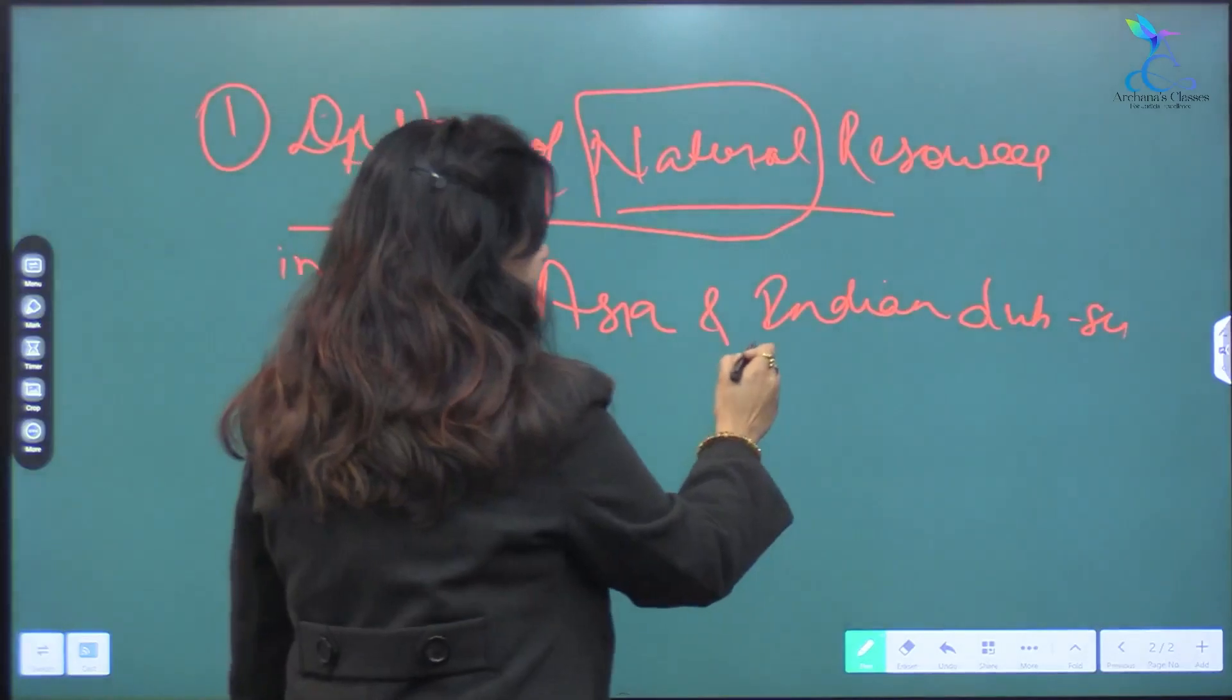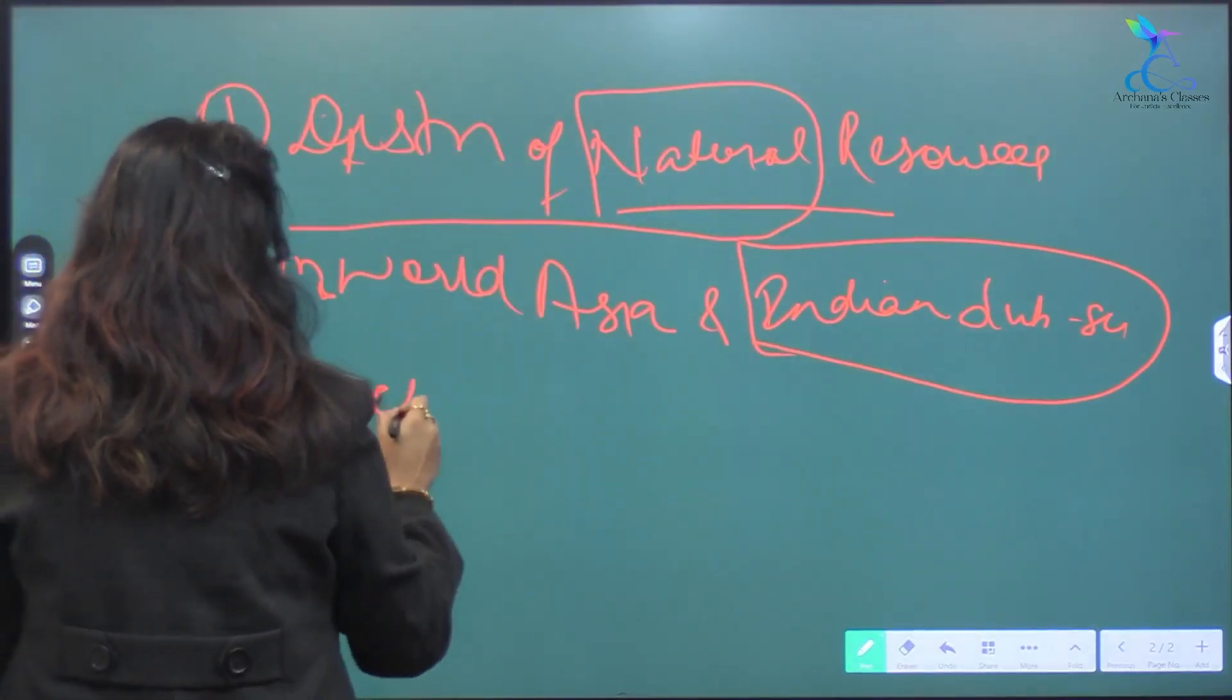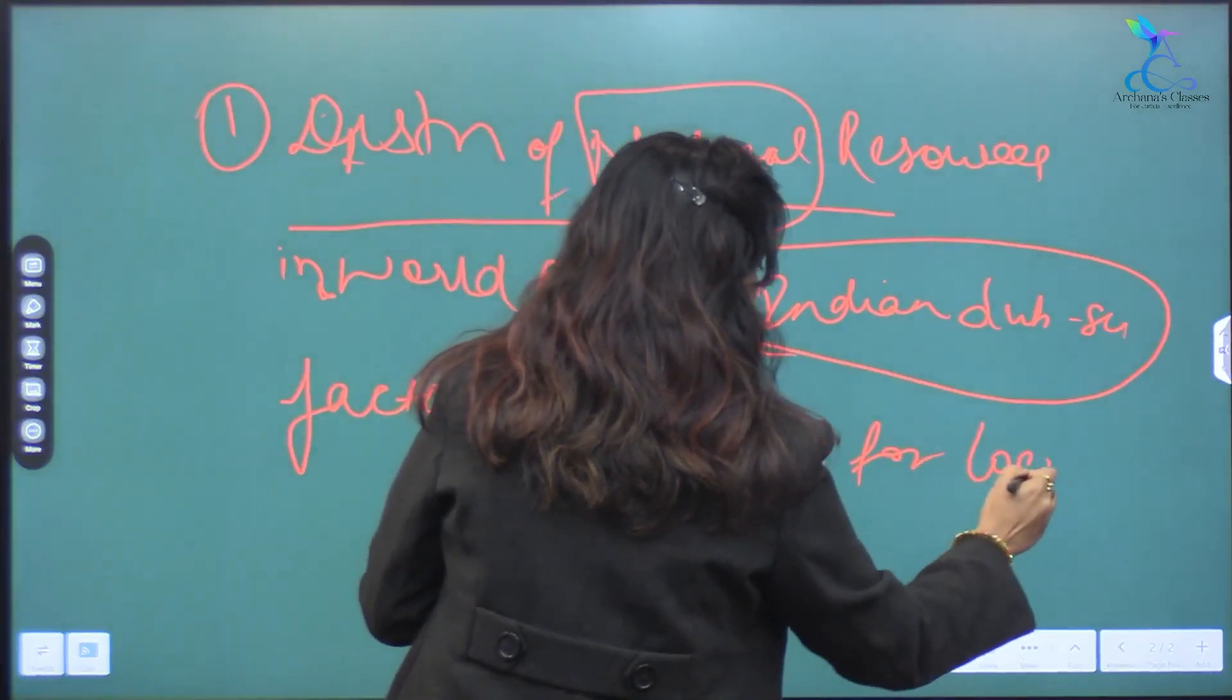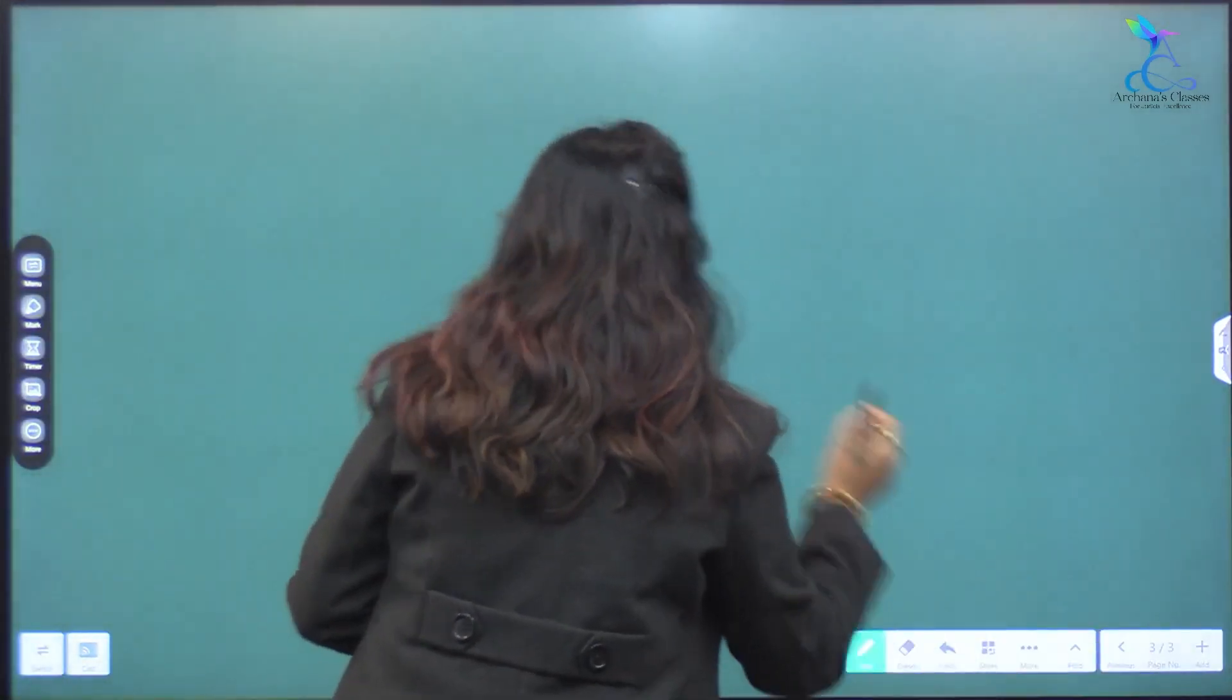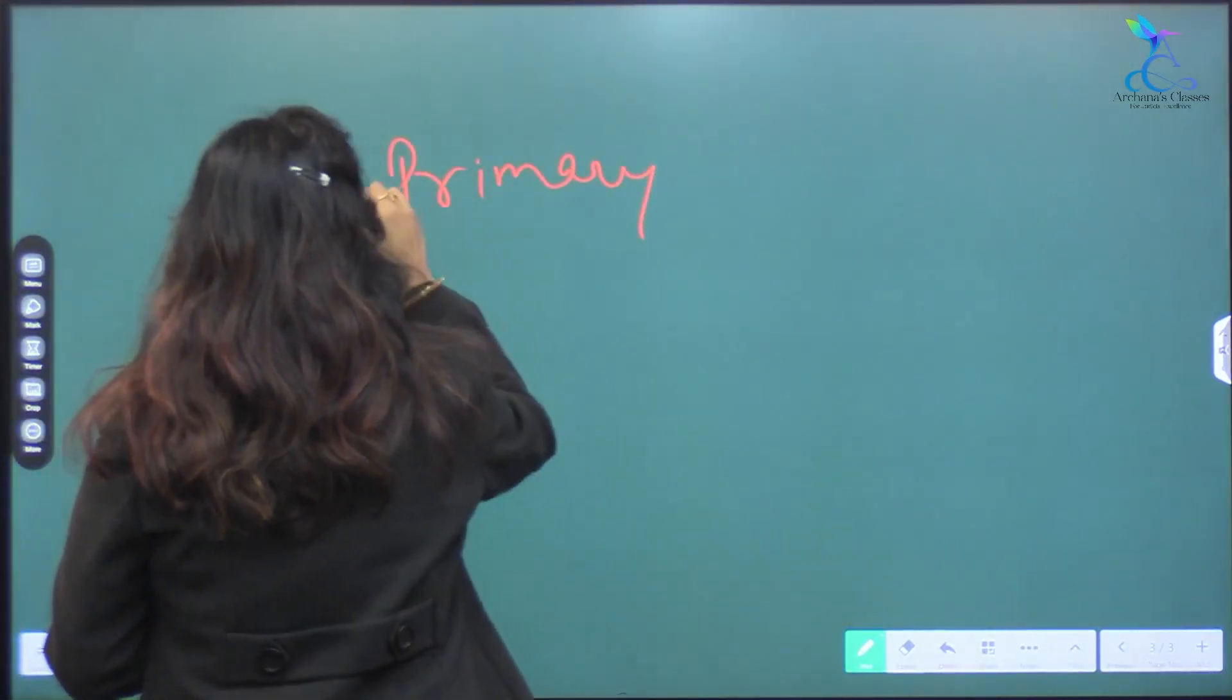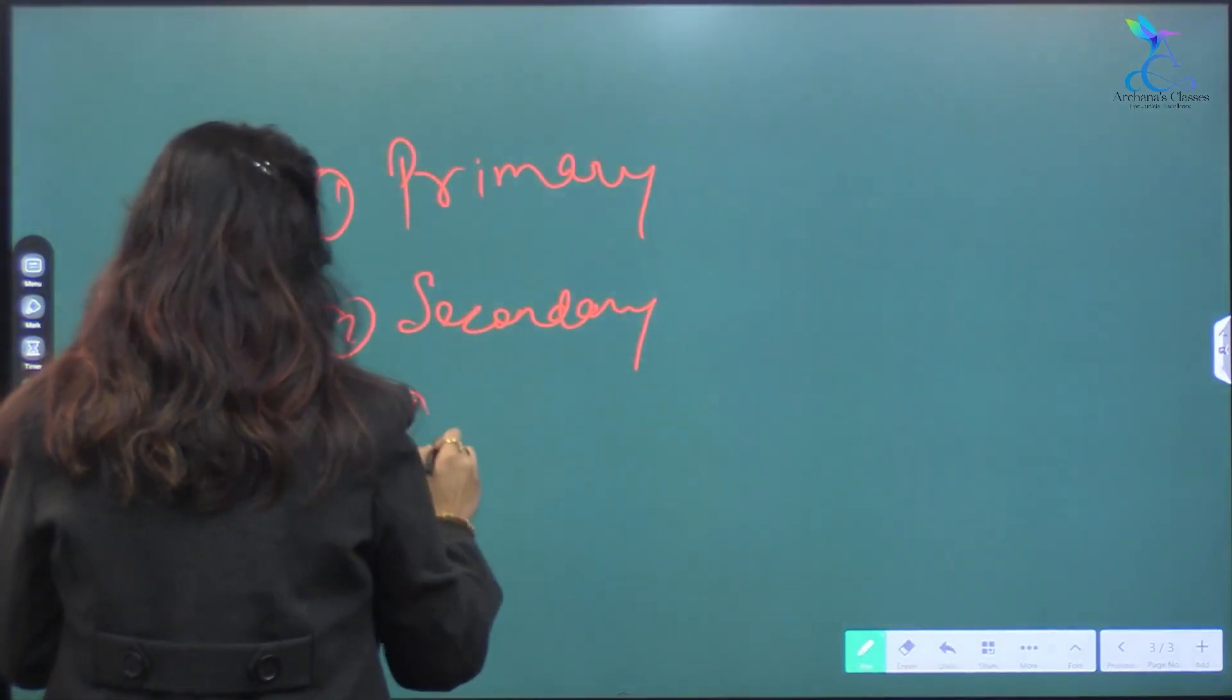So the most neighboring countries that we call Indian subcontinent. Factors responsible for location of industries in various parts of the world, including India. Primary sector, secondary sector, and the third one is tertiary sector.